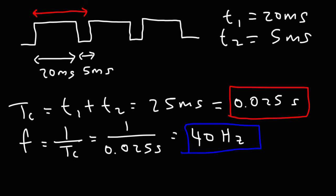Now let's calculate the duty cycle. So I'm going to use DC to abbreviate duty cycle. The duty cycle is the pulse width divided by the cycle time. So we have a pulse width of 20 milliseconds and the cycle time of 25 milliseconds. Let's not forget to multiply that by 100 percent. So 20 divided by 25, that's 0.8. 0.8 times 100 percent is 80 percent.